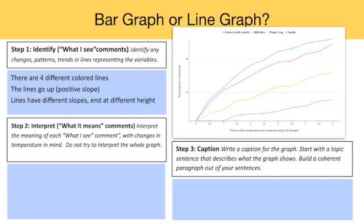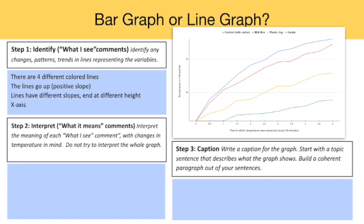We can identify that the x-axis represents time, while the y-axis represents temperature in Fahrenheit, and we can see that the red and blue lines have a higher slope at the beginning than at the end, while the yellow and green lines have a more constant slope.